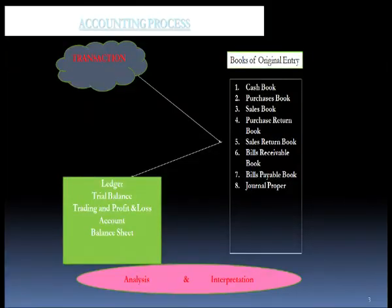Various accounts were built up, and thereafter you also made the trial balance and checked whether your debit entries and credit entries posted in your journals and entered in your ledger were right or wrong. Thereafter, you went on to make your financial statements — namely the trading account, profit and loss account, and your balance sheet.